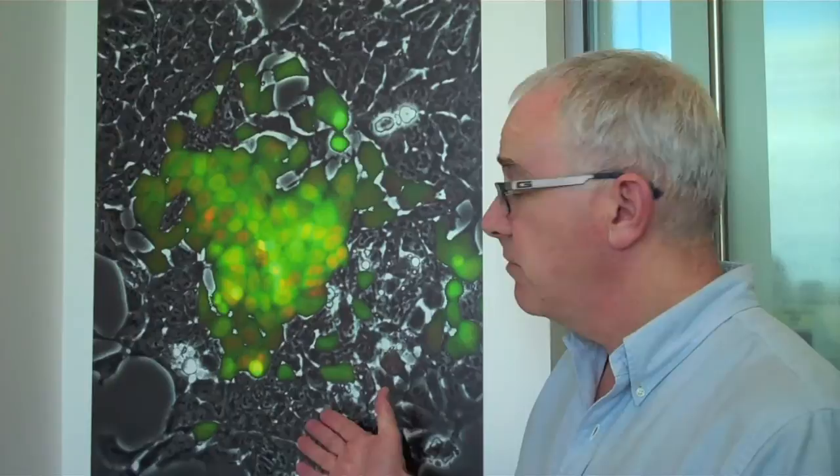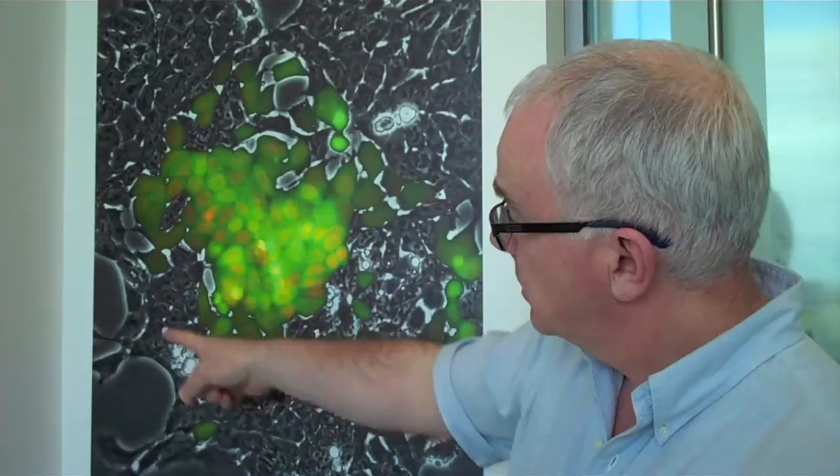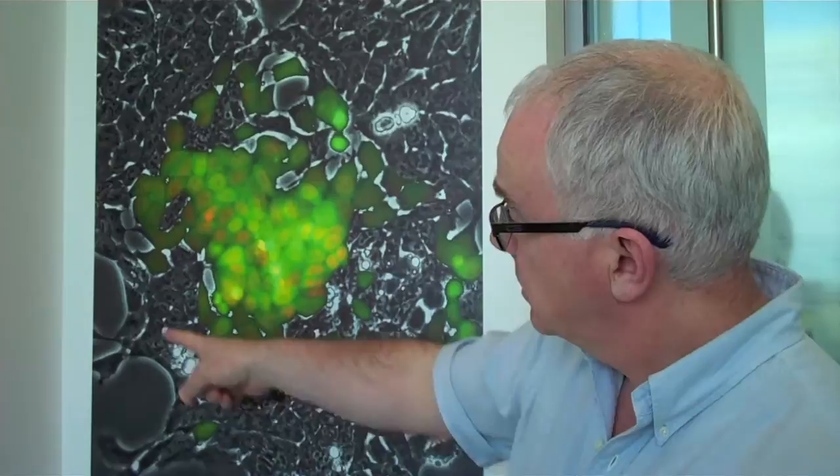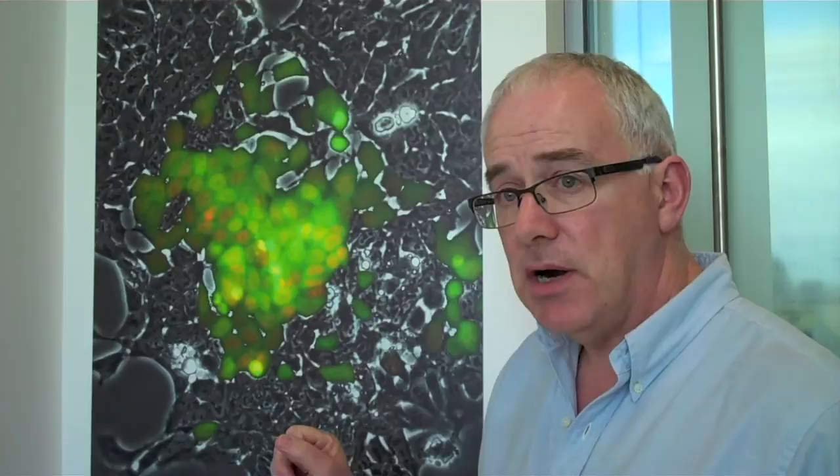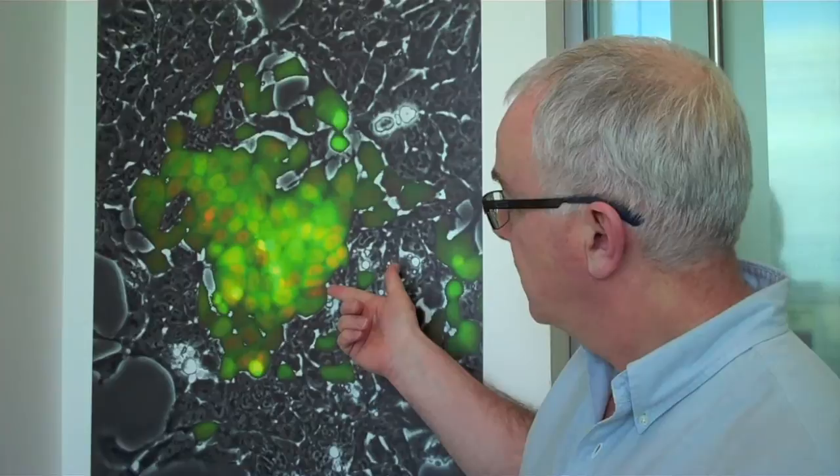This is shown on this photomicrograph here. What you're looking at is a colony of mostly undifferentiated embryonic stem cells. The cells that express NENOG are marked in green, and the cells that express a particular target of NENOG are also marked by the expression of this red protein.